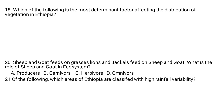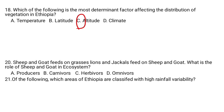Question number 18. Which of the following is the most determinant factor affecting the distribution of vegetation in Ethiopia? A. Temperature, B. Latitude, C. Altitude, D. Climate. Altitude is the major determinant factor. As altitude increases, temperature increases, rainfall increases, and the density of vegetation also increases. As altitude increases, climate becomes cooler and rainfall also increases. So altitude is the most determinant factor.